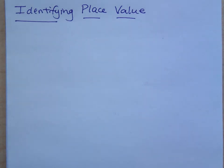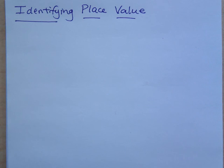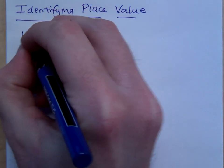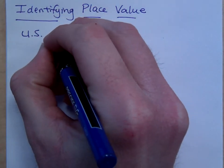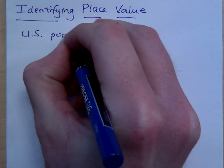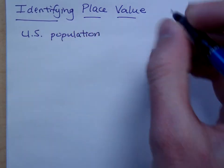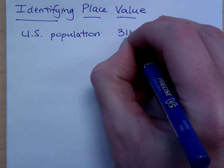Now what I want us to do is identify place value in a number. We should be able to look at any number and identify the place value of all the numbers in there. I was playing around on the Internet yesterday and I found something that said that the population of the U.S. was this.